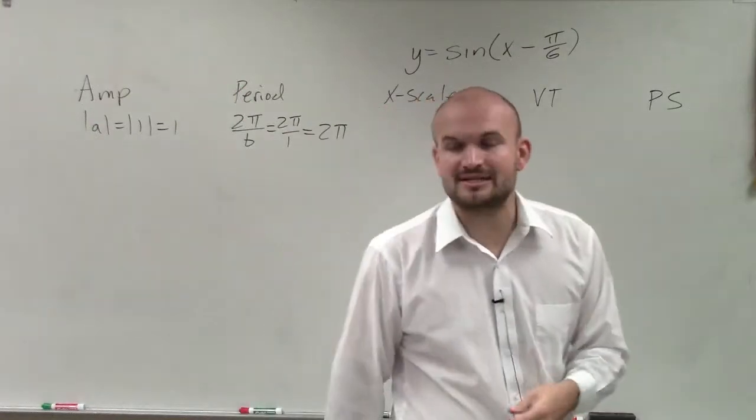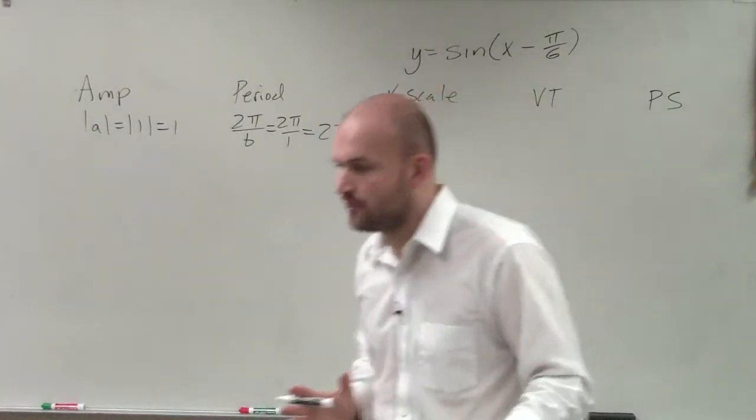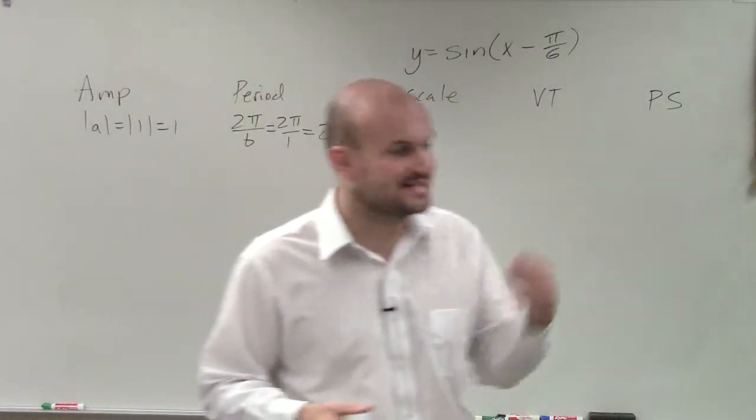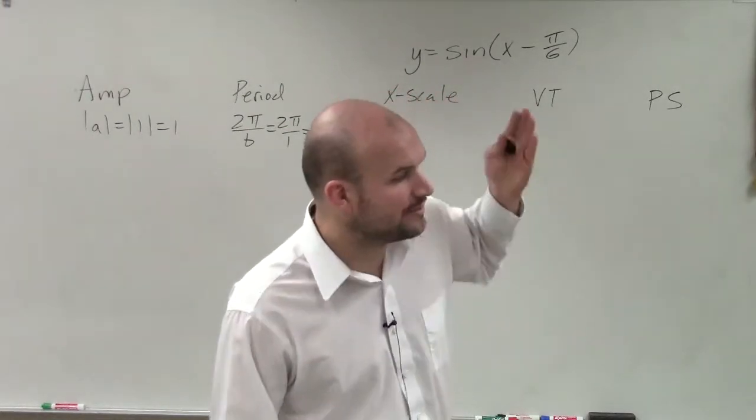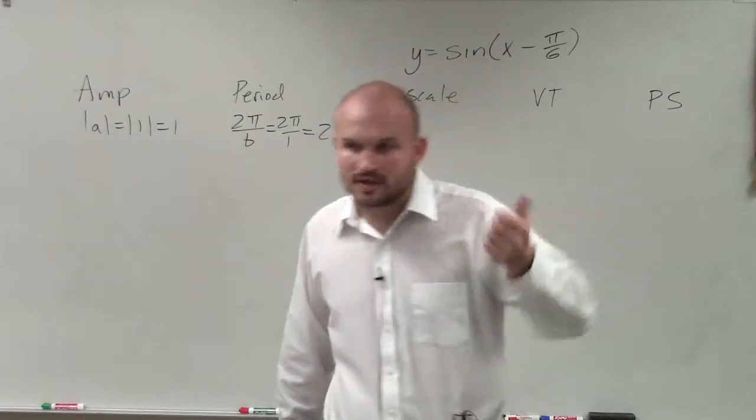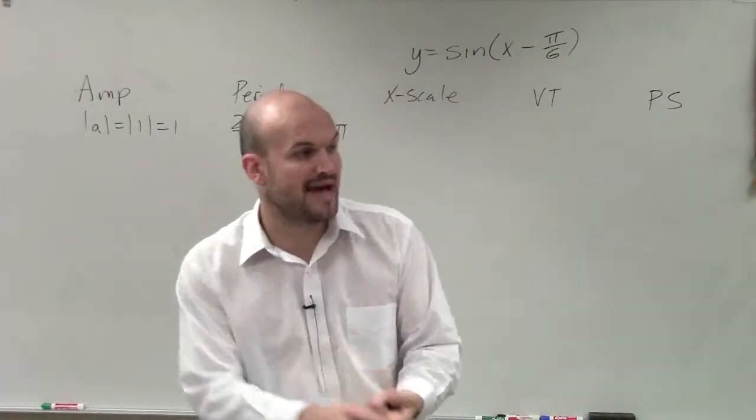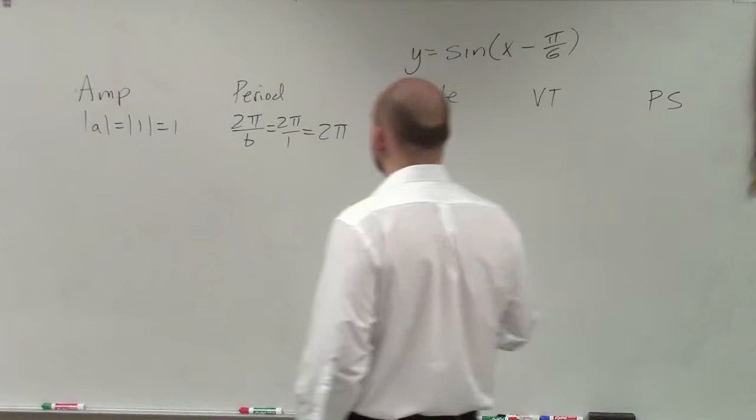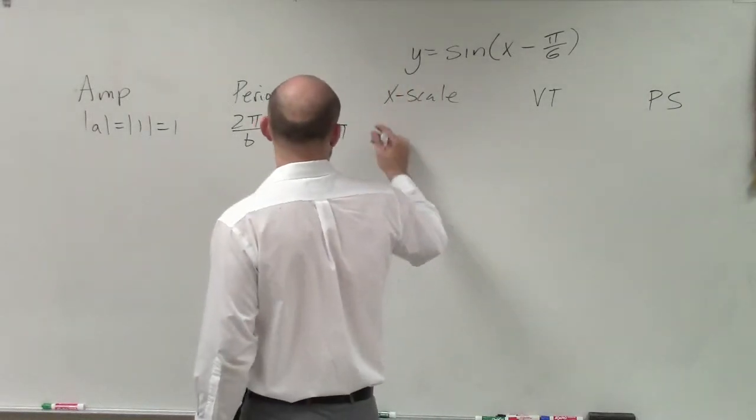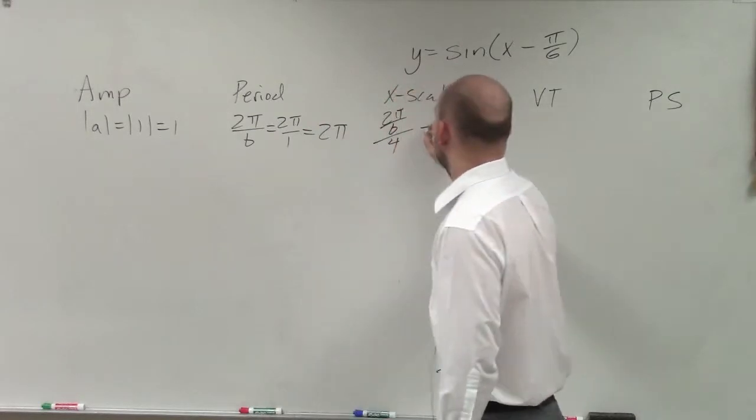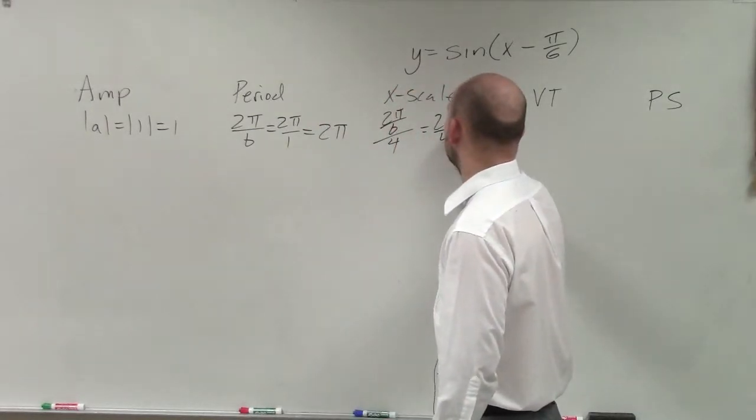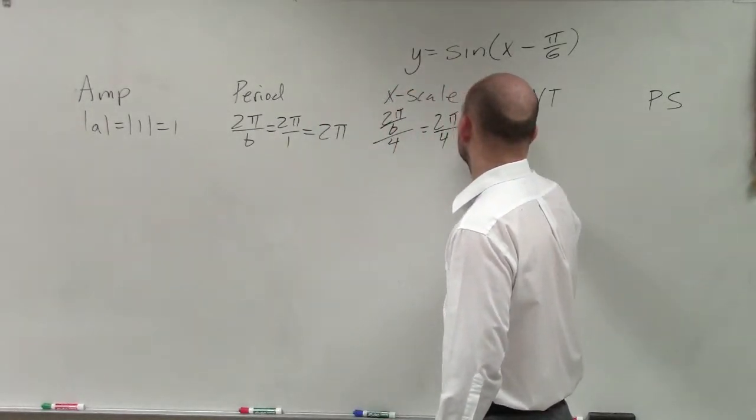The x scale, remember, is taking your period and dividing it by 4. What the x scale helps us do is scale our graph, helps us scale our graph. And what we know is that each scale point, we're going to have important points, x-intercepts, maximum, minimums, x-intercepts, and keeps on going on and on forever. So the x scale is 2 pi divided by b divided by 4. Well, in this case, I have 2 pi divided by 4, which equals pi halves.